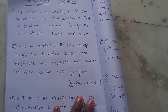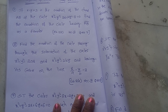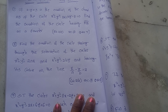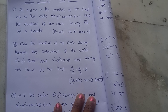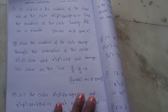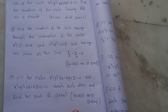Next, find the equation of the circle passing through the intersection of the circles x² + y² = 2ax and x² + y² = by, and having its center on the line x/a − y/b = 2. This is Exercise 2A, Section 3, Question 8.